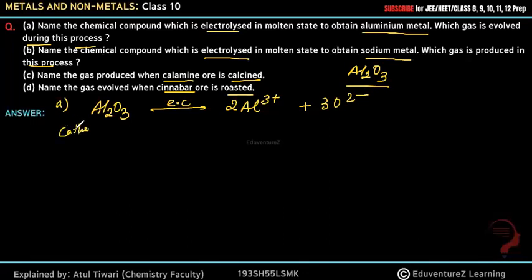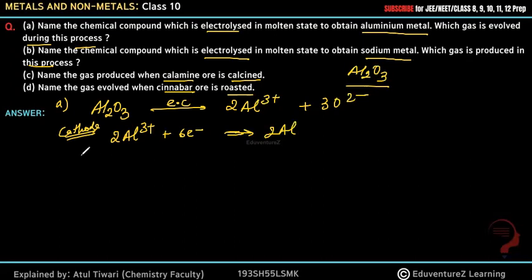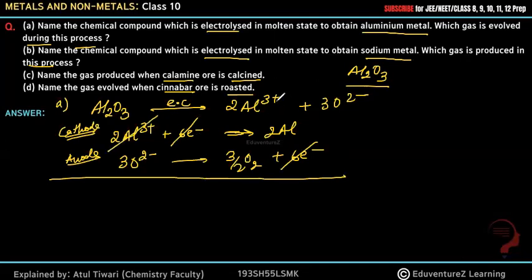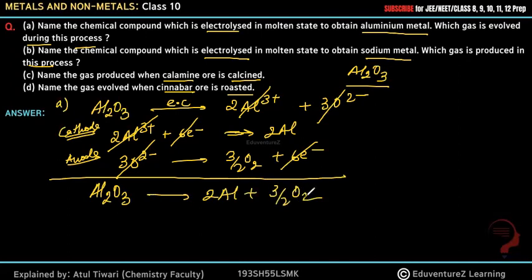In electrolysis, there are two parts: cathode and anode. At the cathode, the positive charge Al³⁺ accepts electrons and converts into aluminum metal. At the anode, the oxygen ion loses its electrons. Overall, when you balance the reaction — 6 electrons cancel, 2Al³⁺ and 3O²⁻ cancel — we get: Al₂O₃ → 2Al + 3/2 O₂.